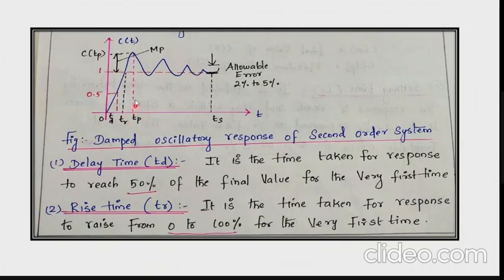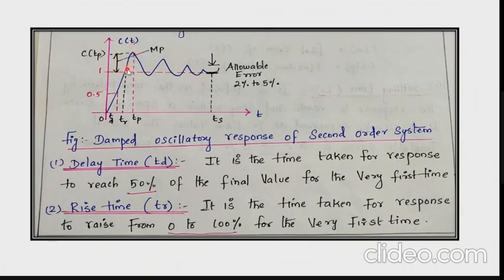Next is maximum peak overshoot, denoted as Mp. Mp is the maximum difference between the peak response and the final steady-state value. This is the maximum peak overshoot.